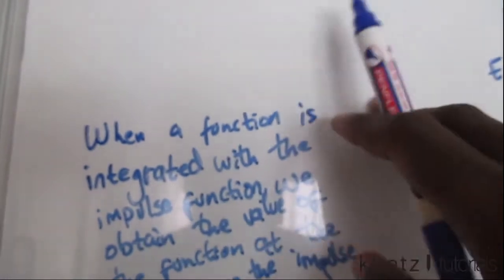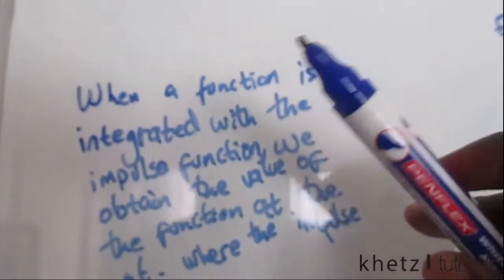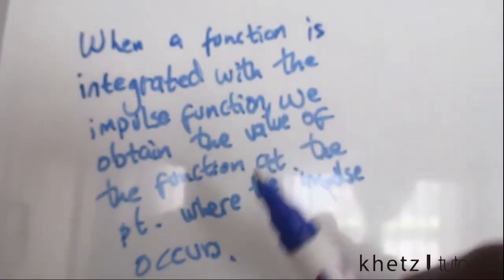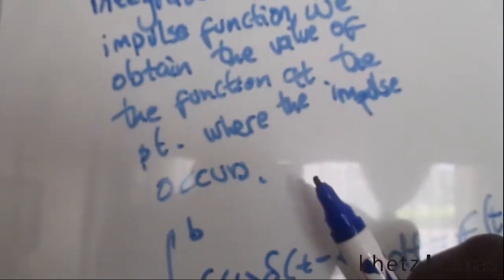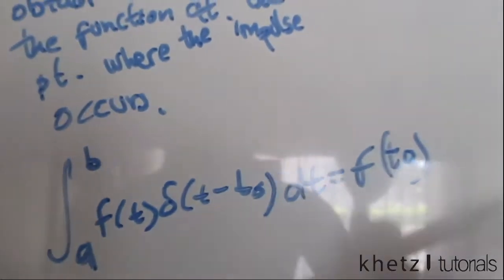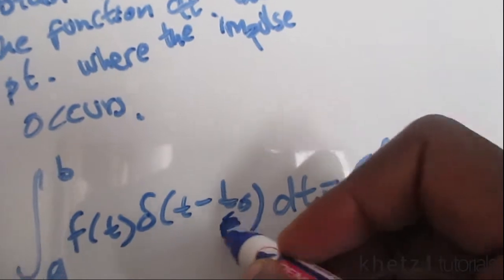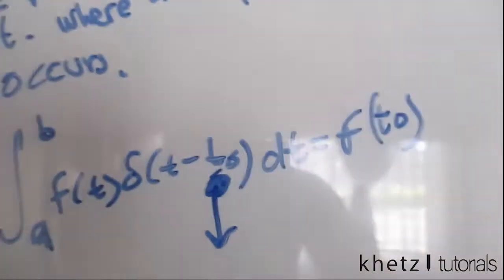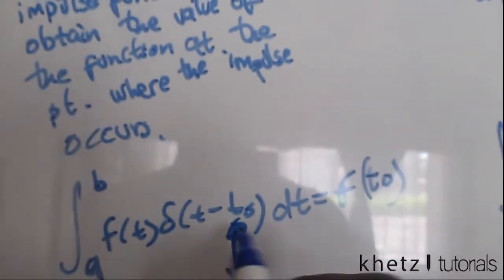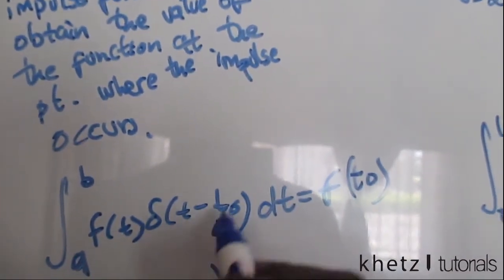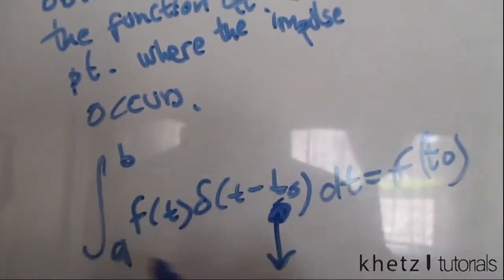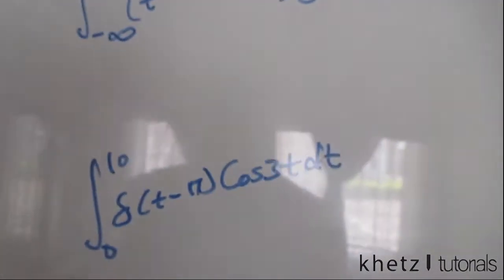Here's a rule that says when a function is integrated with the impulse function, we obtain the value of the function at the point where the impulse occurs. This means we essentially just forget about the limits of the integral and just look at where the impulse occurs, which is at t equals t0, and we substitute this value into the function we're multiplying by.